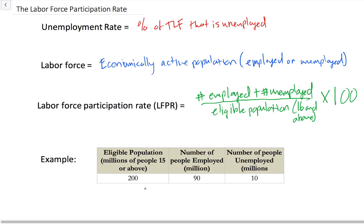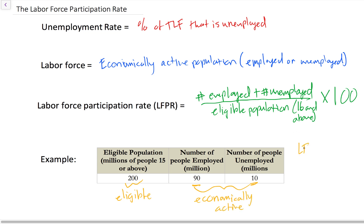Let's do an example. We have a country with a population of 200 million adults — these are the eligible people who could be participating in the labor force. Of those, 90 million are employed and 10 million people are unemployed. So this is the economically active population. We can now calculate the labor force participation rate, and we'll also be able to calculate the unemployment rate from this data.